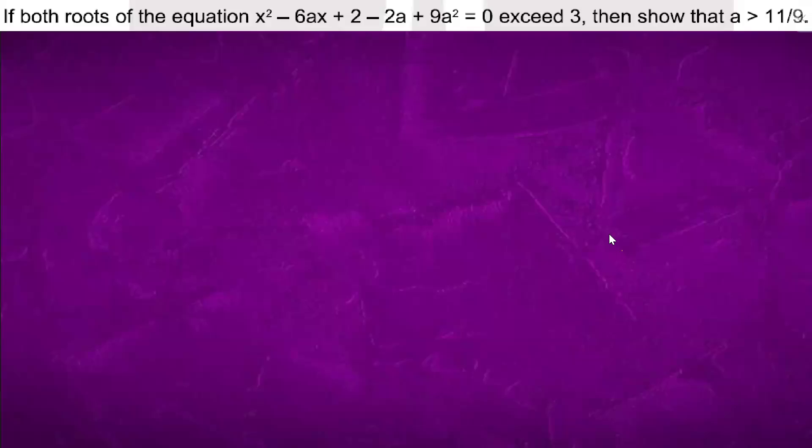In this problem, we have x² - 6ax + 2 - 2a + 9a² = 0, where both roots exceed 3.